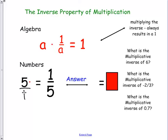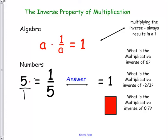For example, if we had 1 fifth, it would be 5 over 1. So that would equal 1. It should be 5 times 1 fifth equals 1. So multiplying the inverse always results in a 1.